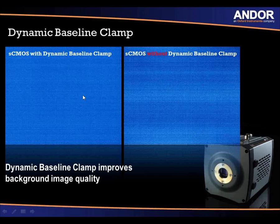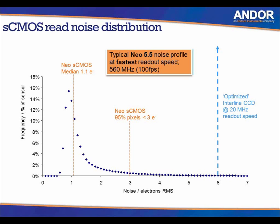In EMCCD cameras, all read noise happens at one node, giving a single read noise value for different readout speeds. With sCMOS, read noise is displayed as a distribution. For the Neo sCMOS, the median read noise is 1.1 electrons — extremely low compared to an interline CCD camera at 20 MHz which has 6 electrons read noise. The Neo achieves this at 560 MHz, so it is dramatically faster and much lower in read noise. Notably, 95% of the five-and-a-half million pixels on the Neo sCMOS have less than three electrons read noise.